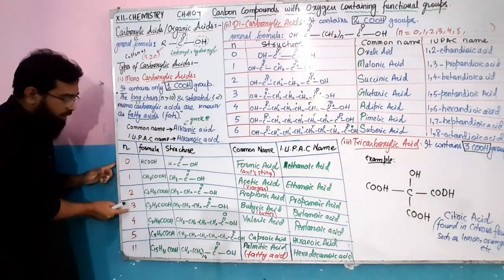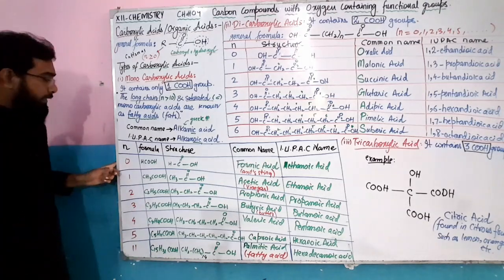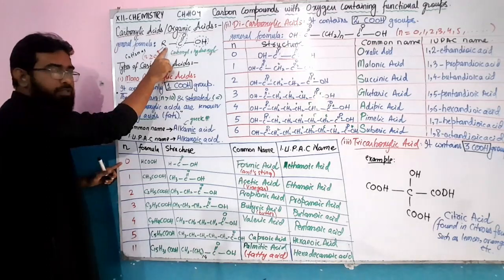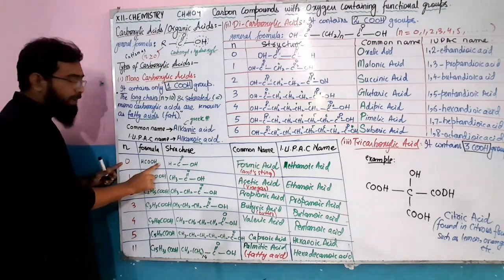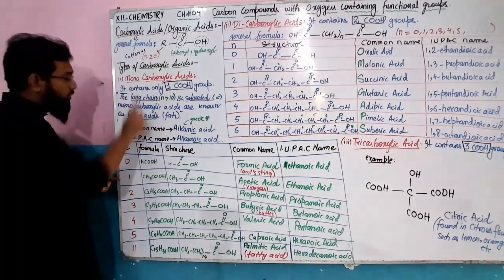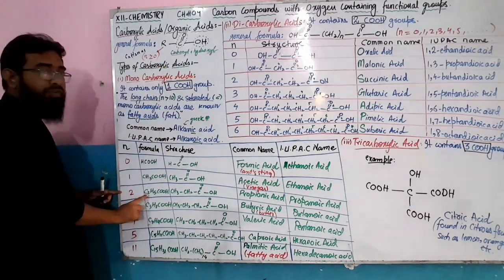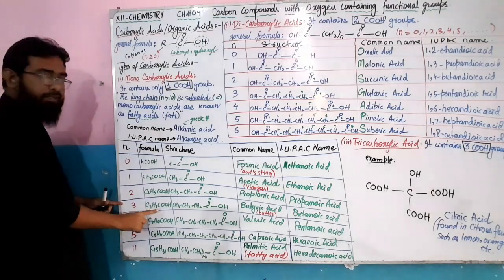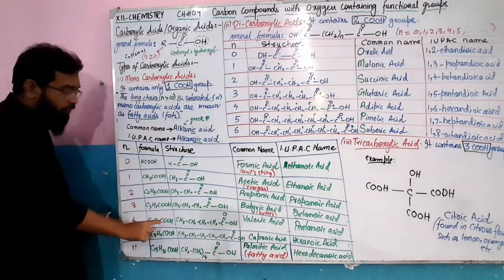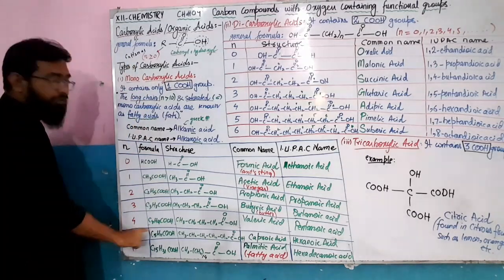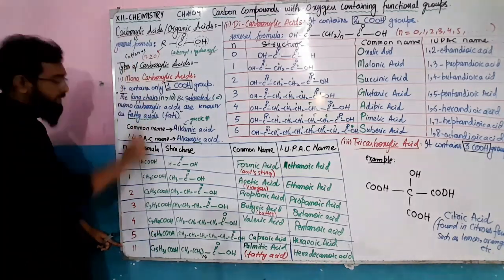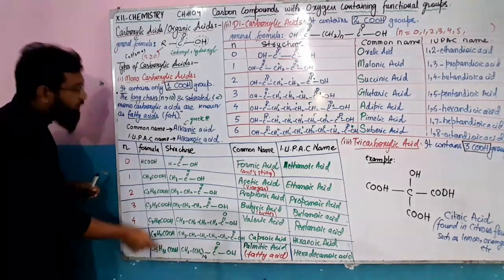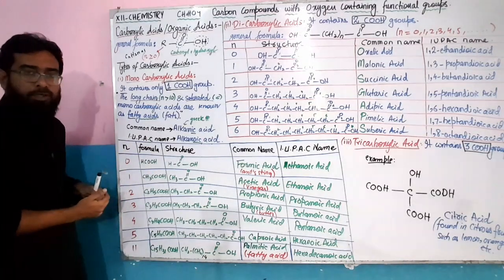If n equals 1, 2, 3, 4, 5 and so on, the monocarboxylic acid series is: n=1 gives H-COOH; n=2 gives CH3-COOH; n=3 gives C2H5-COOH; n=4 gives C3H7-COOH; n=5 gives C4H10-COOH; n=6 gives C5H11-COOH; and continuing up to n=16 giving C15H31-COOH, and so on infinitely.